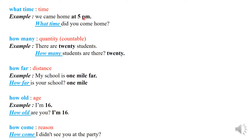'How many' is for quantity but countable things — things you can count: 1, 2, 3, 4. Example: There are 20 students. How many students are there? 20. You see, you count 1, 2, 3, 4 — 20.